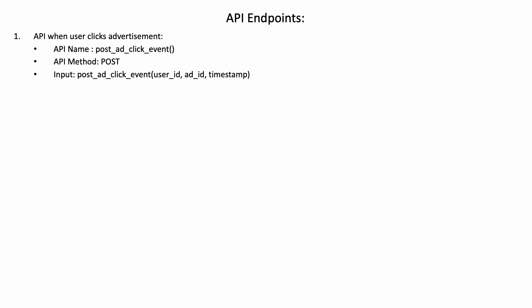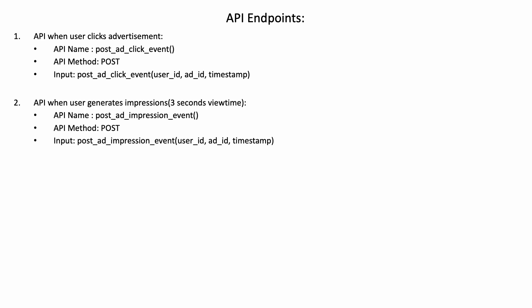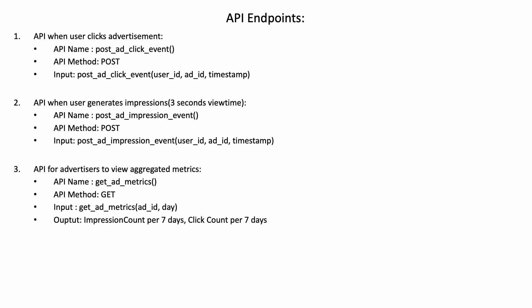Let's define the API endpoints. We will have an API for when a user clicks the advertisement — this takes input as user ID, ad ID, and timestamp. We will have an API for when a user generates an impression — this also takes user ID, ad ID, and timestamp. We will have an API for advertisers to view aggregated metrics, taking ad ID and day as input, with output of impression count and click count per 7 days from the given day.